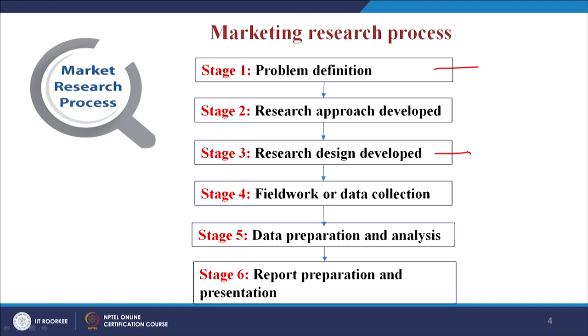That is the first starting point. Some people say that if you have done your problem definition clearly, you have done 25% of your research job. The second stage is research approach — to develop the research approach. What kind of research process would you have? How would you approach the problem? What kind of methods would you like to use in the study? The third stage is design of the research problem. Research design includes everything.